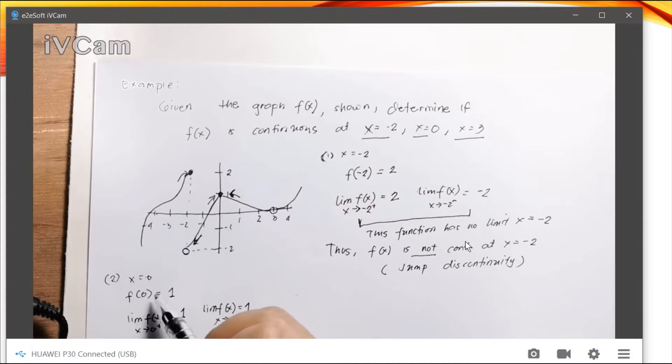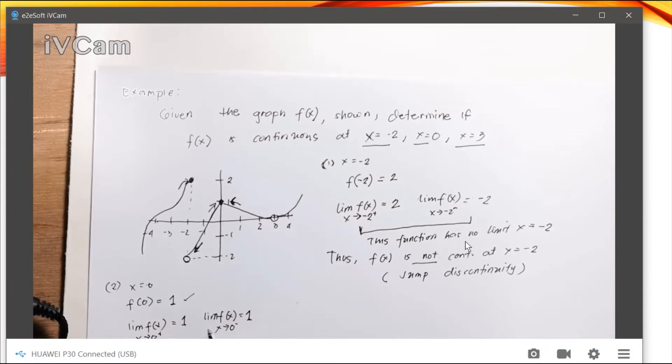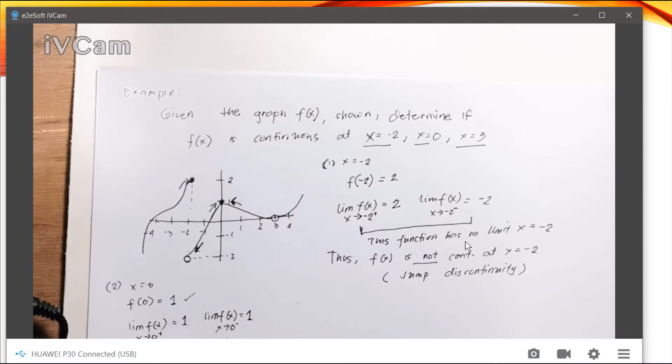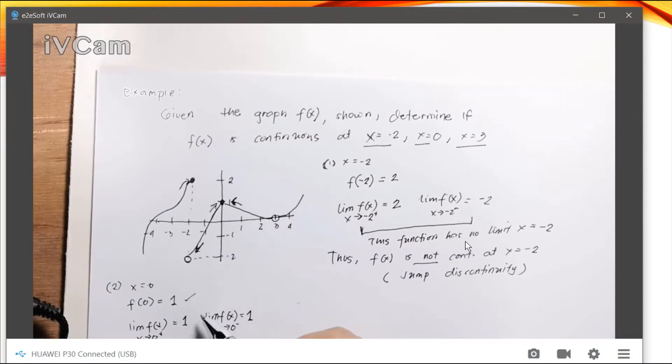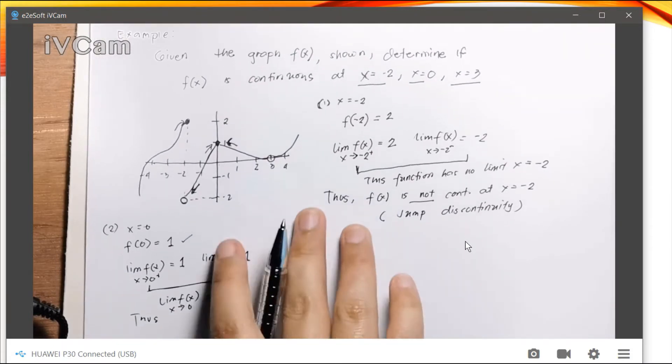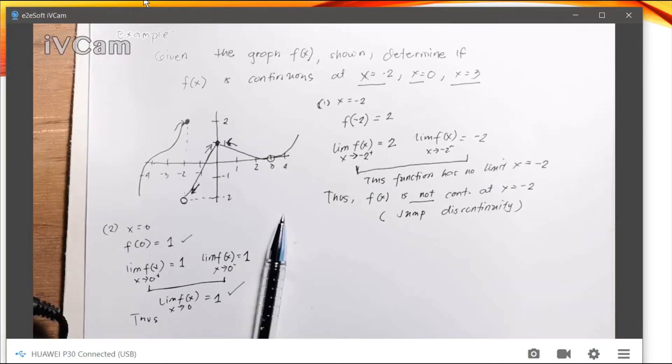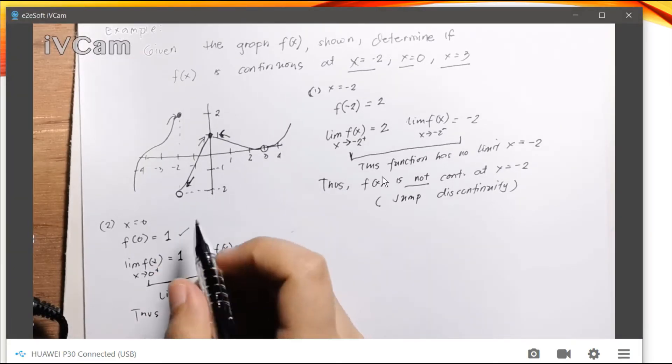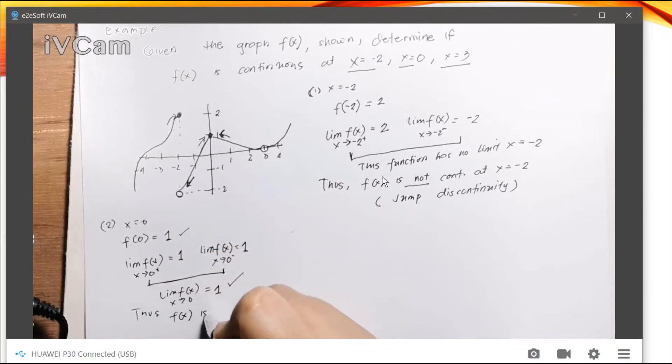So we see that as our x approaches 0, our y also approaches 1. So since there is a value at f of 0, and also this function has a limit since a limit exists from both directions at x equals 0, this means that the limit of f of x as x approaches 0 is 1. So if these two conditions are met, we say that thus, this function, f of x, is continuous at x equals 0.